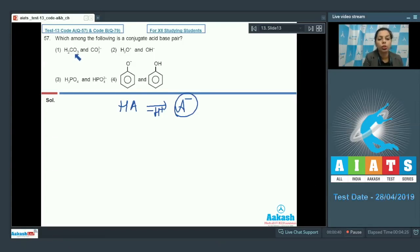It means, if I talk about the first option, H₂CO₃ is given here. And, from this H₂CO₃, if I remove one proton, it gets changed into HCO₃⁻. That would be the conjugate base of H₂CO₃. So, this is not representing the conjugate acid-base pair.